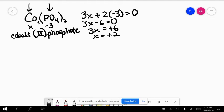Let's compare that to the other possibility, which would be cobalt three. If cobalt was a plus three and phosphate was a minus three, they would come together like this, and this would be cobalt three phosphate.